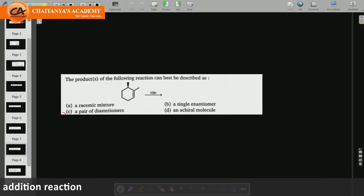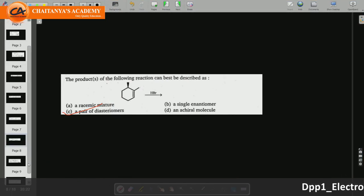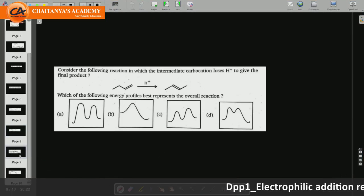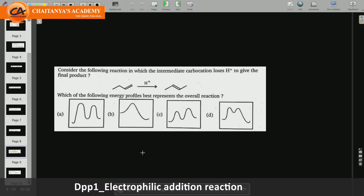Out of four options, option C is the correct option, that is pair of diastereomers. Now, BPP 1 question number 9.